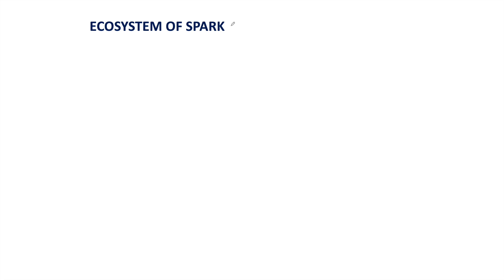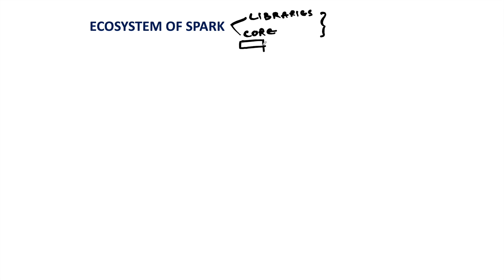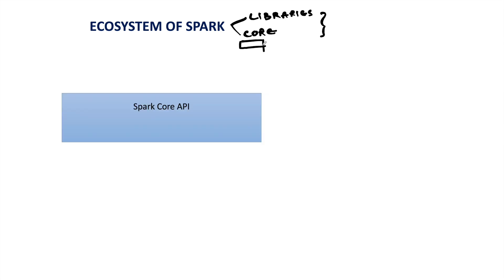Hey everyone, this is going to be a continuation of the introduction session on Apache Spark. In this session we are going to discuss the ecosystem of Spark, which will help us understand how the components of Spark are attached together. The ecosystem of Spark has two layers: one being the core layer and the other one is libraries. The center of attraction for the Spark ecosystem is Spark Core, which itself has two parts: the Spark Core API and the distributed processing engine, which is the Spark execution engine.